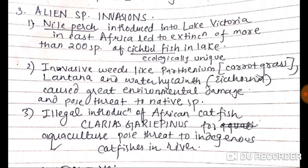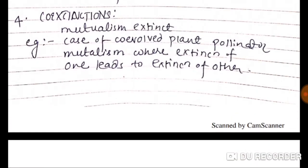The illegal introduction of African catfish, i.e., Clarias gariepinus, for aquaculture posed a threat to indigenous catfishes in rivers. The fourth cause is co-extinction. In cases of evolved plant-pollinator mutualism, the extinction of one species leads to the extinction of the other. Without the mutualist partner, the other species cannot survive — these are known as co-extinctions.